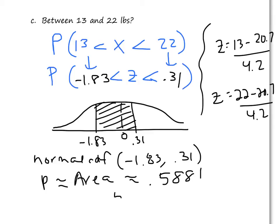So we would have about a 58.81% chance of choosing a person and having them eating between 13 and 22 pounds. In other words, 58.81% of people eat between those two amounts.